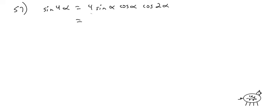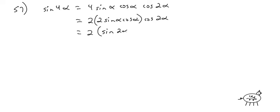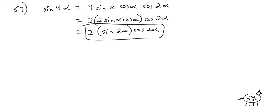I have 4 sine of alpha cosine of alpha — I'm going to take out a 2, so I can write 2 times 2 sine of alpha cosine of alpha times cosine of 2 alpha. That 2 sine of alpha cosine of alpha is the double angle for sine — it's sine of 2 alpha. So now we have another double angle for sine.